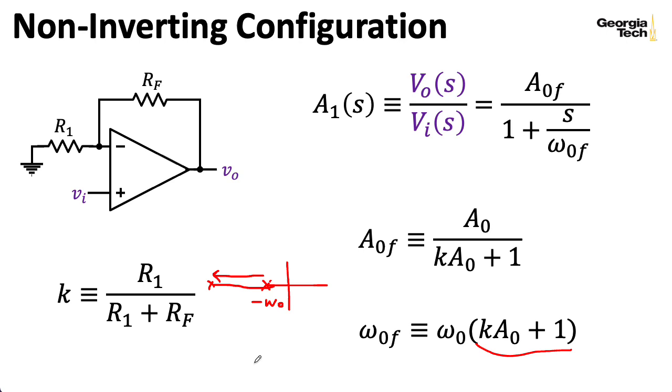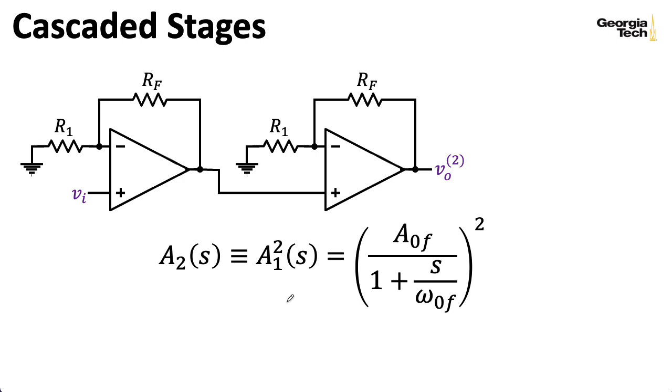Now suppose I were to cascade two of these stages. Well, the transfer function for that, that I'm calling a sub 2, would be just the transfer function for one of the stages squared. So let me take that transfer function and square it. And I should mention that although I'm doing this analysis in terms of operational amplifiers set up in non-inverting configurations, the kind of analysis that I'm going to do after this applies to whatever kind of amplifier stages you might have, as long as you can characterize them with this transfer function according to a DC gain and a corner frequency.